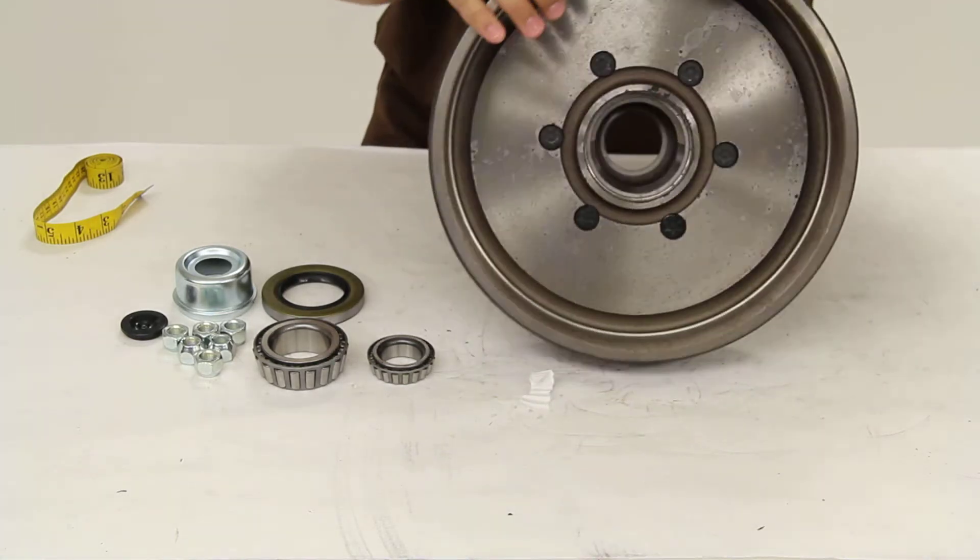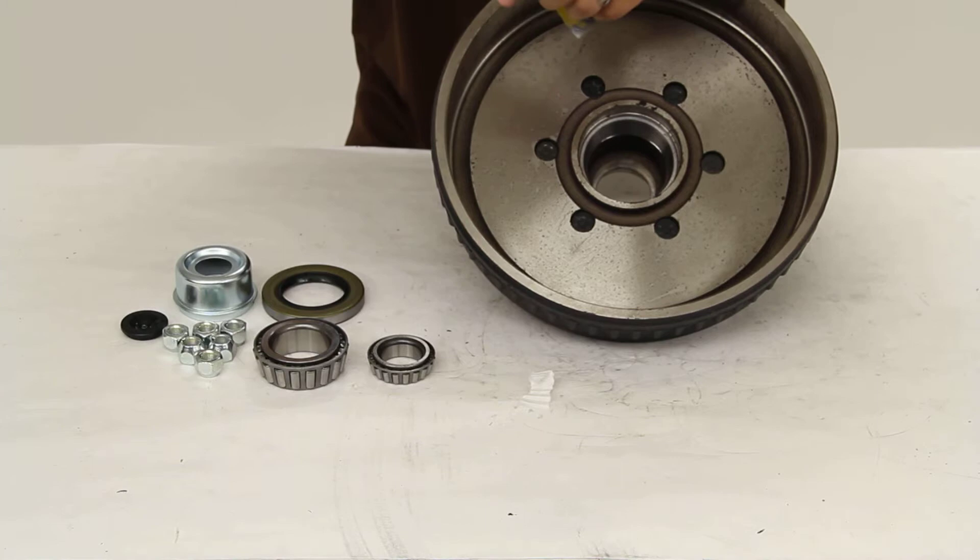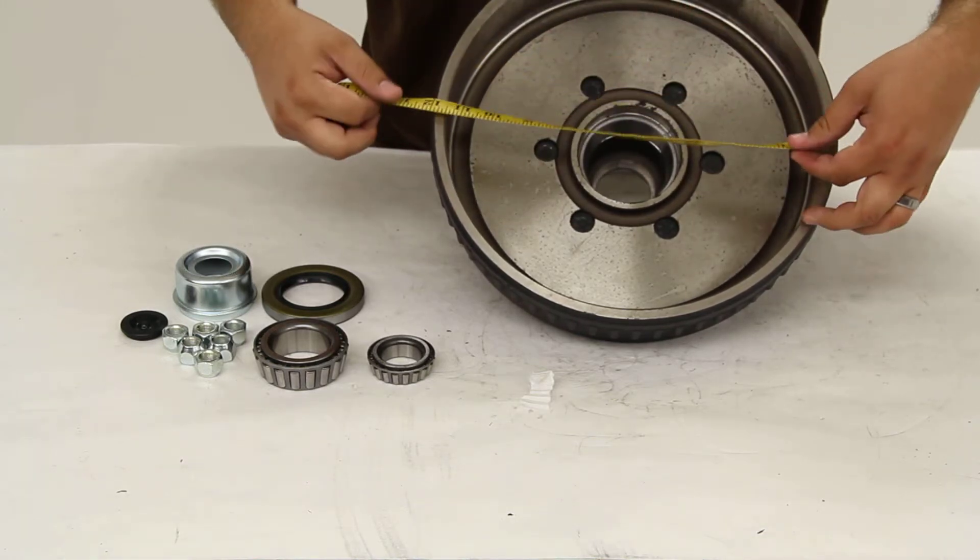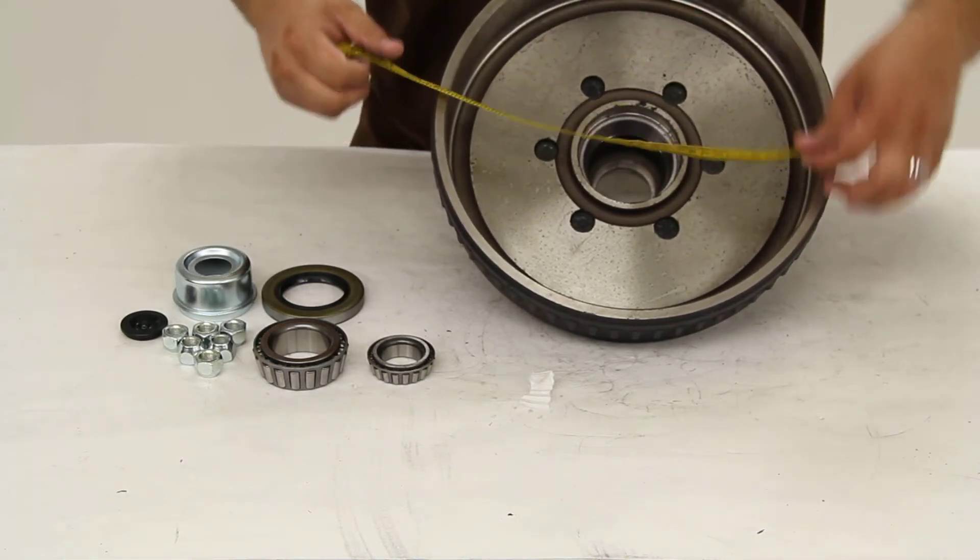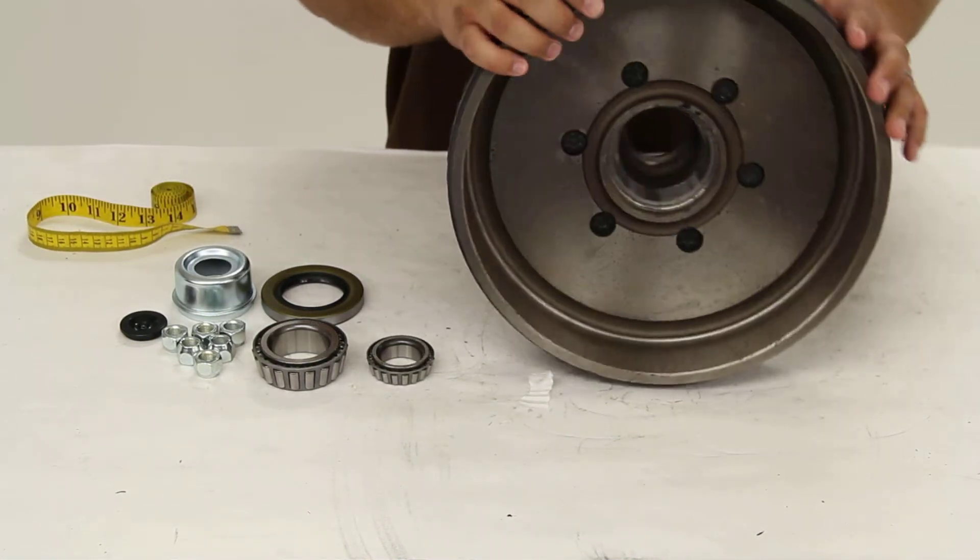Now we'll flip it over and go over the inside dimensions. On our depth, we get about 2 1/4 inches. Our diameter across, we get our 12 inches, which means that this drum should be used with 12 inch by 2 inch brake assemblies.